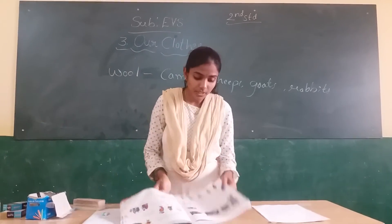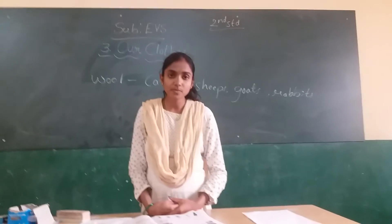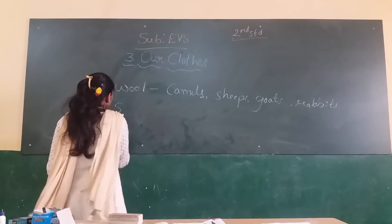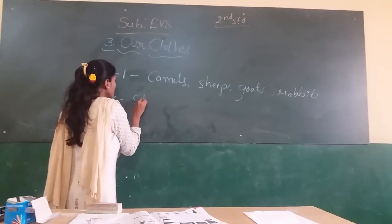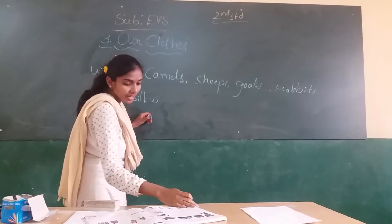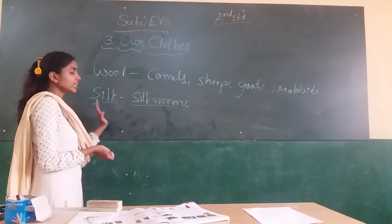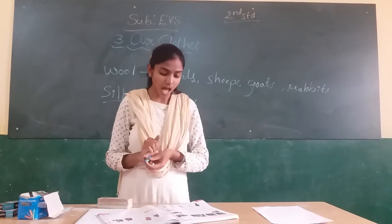These animals give us wool. We also get silk from silkworms. Silk is used to make silk shirts, kurthas, scarves, and neckties.